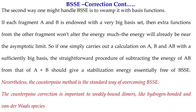Another correction is also possible: if you use a very large basis set, the extra functions from the other fragment won't alter the energy much, because the energy will already be near the basis set limit. So if we perform calculations on A, B, and AB with a sufficiently large basis set, the straightforward procedure of subtracting the energy of A plus B from that of AB will give the stabilization energy directly.